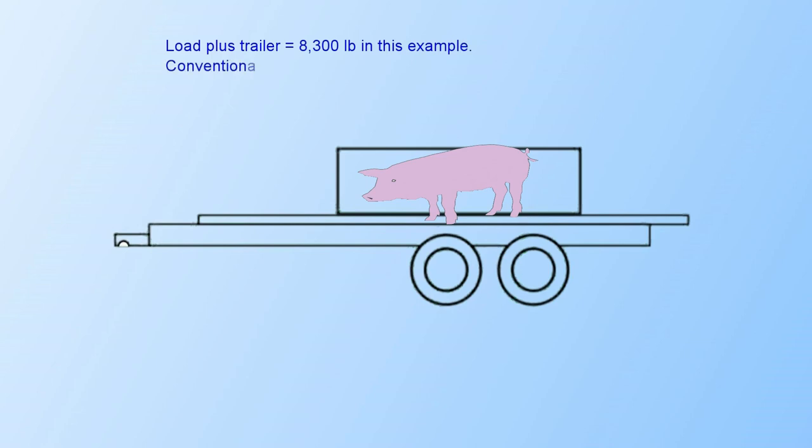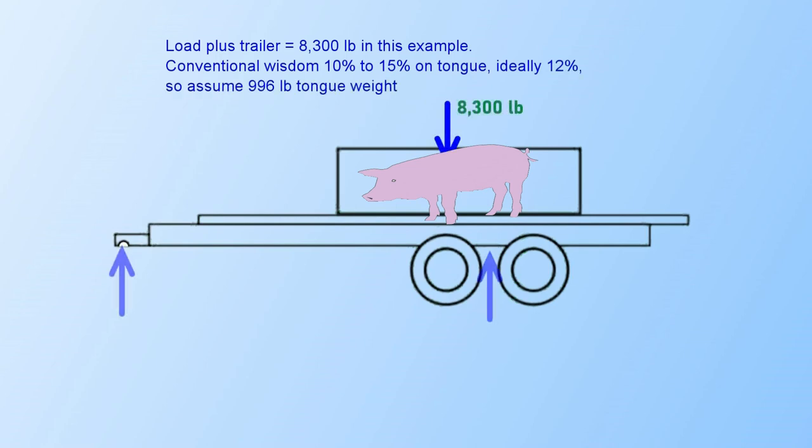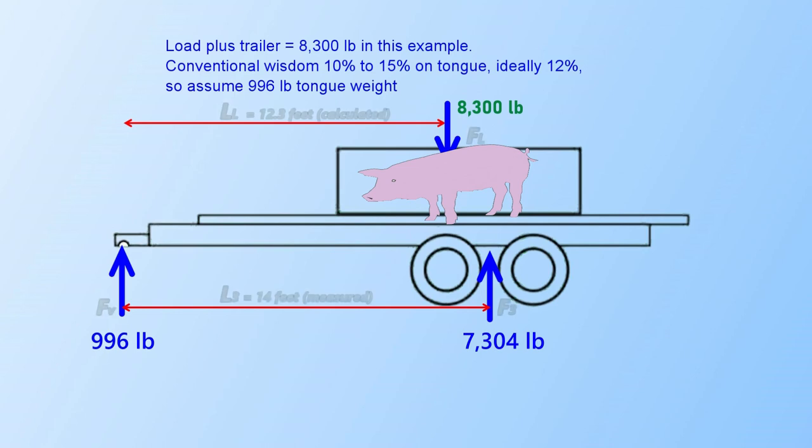We start by looking at a trailer with the maximum rated weight for my truck. Typically, a target of 12% of this weight is applied to the trailer tongue, or in this case, 996 pounds. In order to achieve this weight distribution, we need to locate the combined center of mass for the trailer and load at 12.3 feet from the trailer ball.